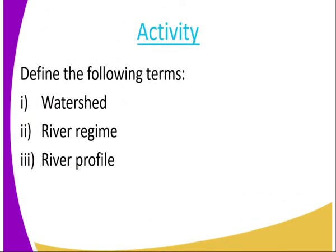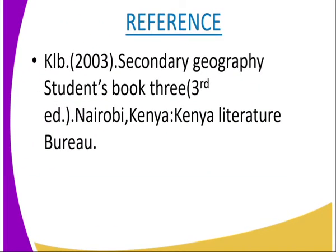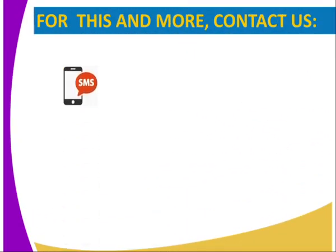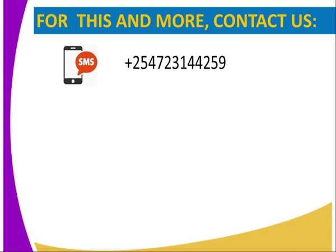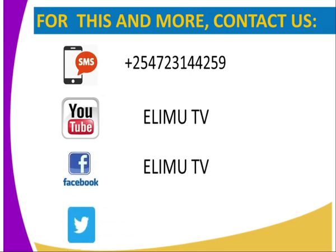For the assignment, define the following terms: watershed, river regime, and river profile. For more information, you can visit the KRB 2003 Secondary Geography Student Book 3, or contact us by SMS, YouTube, Facebook, or Twitter. Stay tuned to the TV. Thank you.